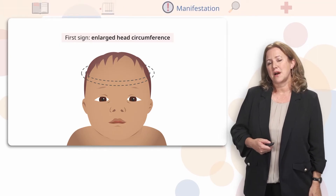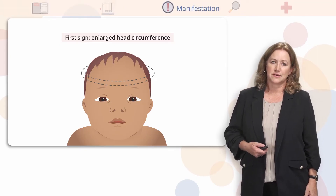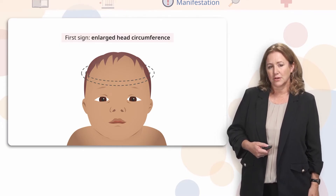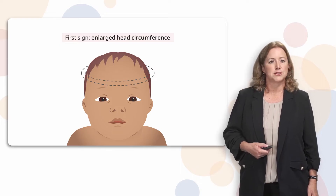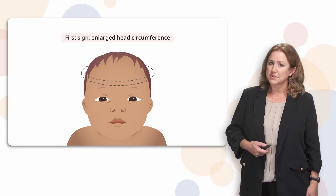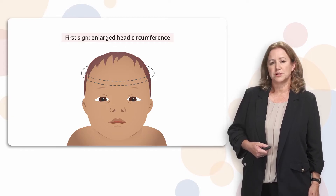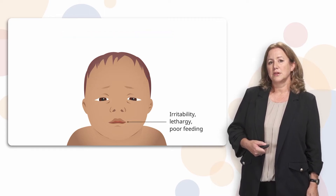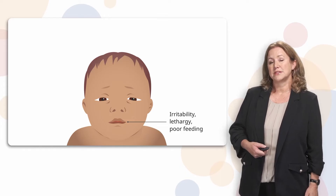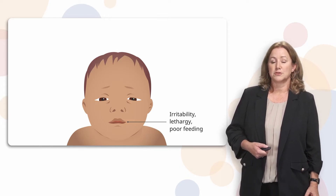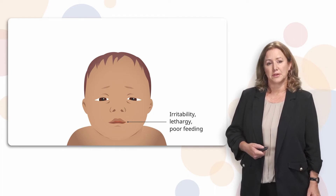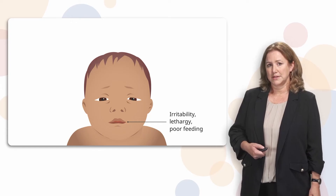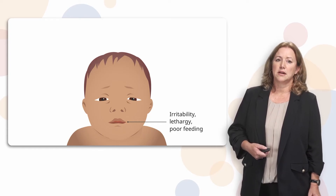Let's review some of the common manifestations of a child who has hydrocephalus. In an infant, the first sign that may be noticed is an enlarged head circumference. Head circumferences should be taken at every routine checkup and also if a child comes in for an illness or injury that may have affected the brain. Early on, if a child has hydrocephalus, they may start displaying subtle signs of illness or altered mental status, such as irritability, inconsolability, lethargy, not wanting to wake up, or poor feeding — which is a really common sign of serious illness or injury in a young infant especially.